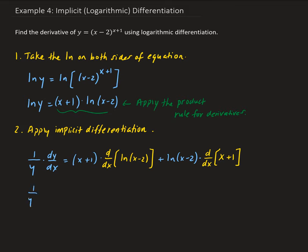So we have 1 over y times dy/dx equals x plus 1 times 1 over x minus 2 times the derivative of x minus 2 — that comes from the chain rule — plus natural log of x minus 2 times the derivative of x plus 1, which is just 1.